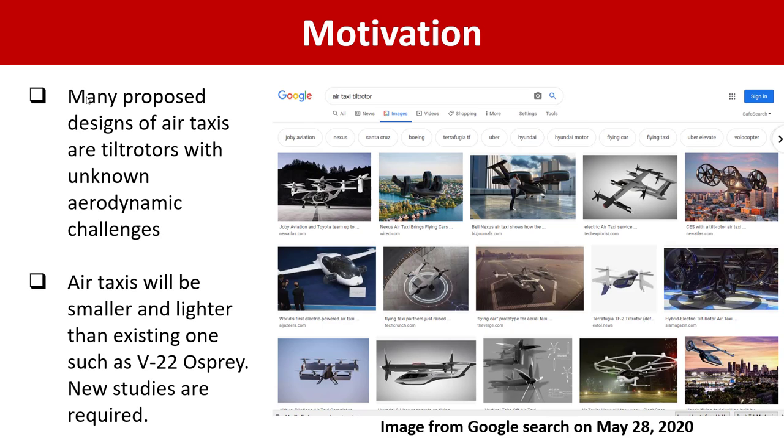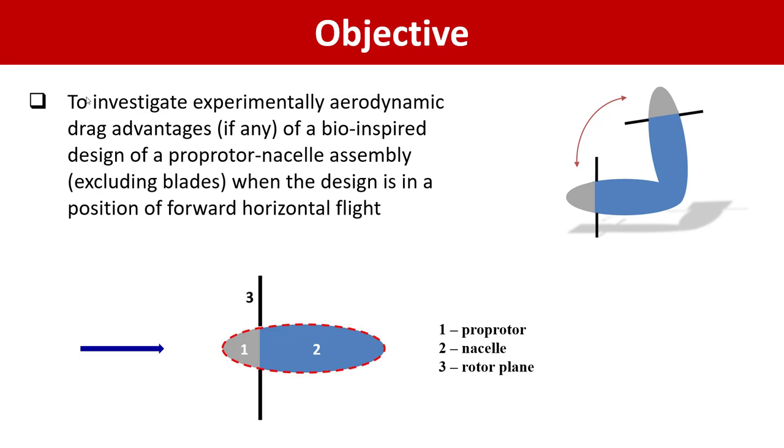So new studies are required starting from experiments, and this is the objective of our study. Specifically, we are looking not at the entire concept of air taxis but only at the assembly of proprotors and nacelle. Usually proprotors are located at the top of the nacelle. Nacelle incorporates all electronics devices relevant to rotor operation in different positions. It also incorporates usually engines or one engine. So the assembly is of large size and one would expect significant contribution to the vehicle drag, which is currently unknown.